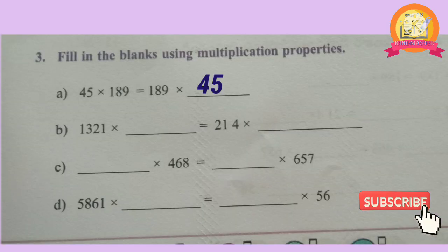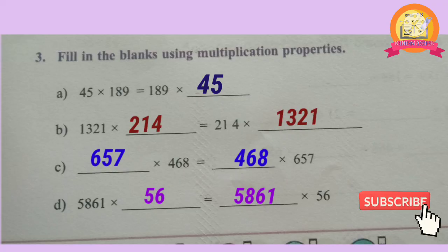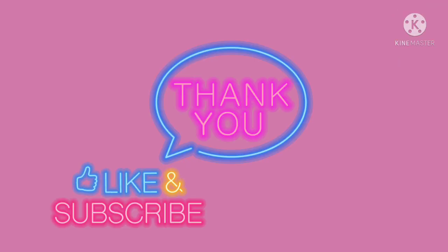Applying commutative property: 45 × 189 = 189 × 45. 1,321 × 214 = 214 × 1,321. 657 × 468 = 468 × 657. 5,861 × 56 = 56 × 5,861. Thank you for watching.